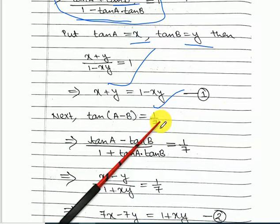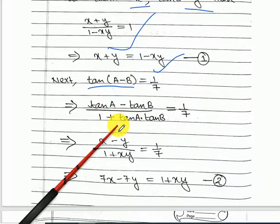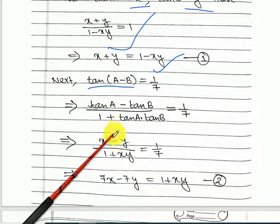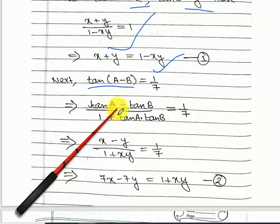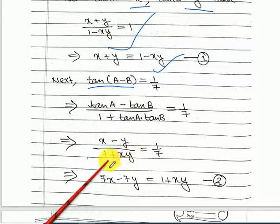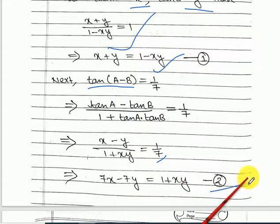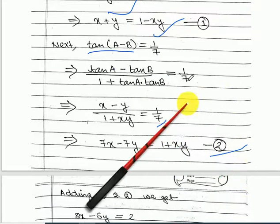Next, tan(A-B) is equal to 1/7. Expand the left hand side, then put tan A equal to x and tan B equal to y. Do the cross multiplication and you will get equation 2.